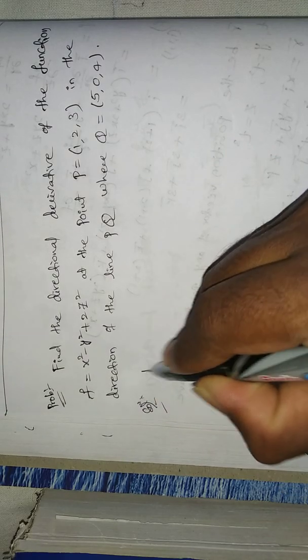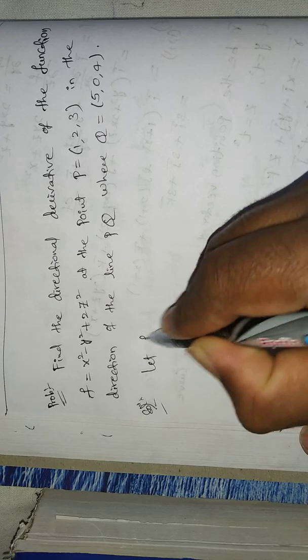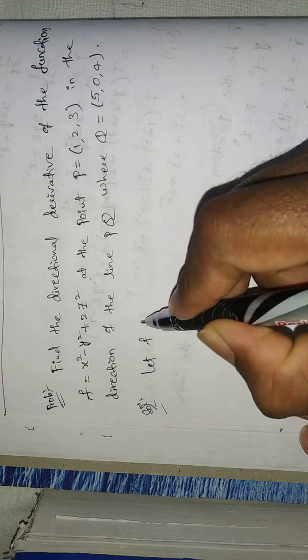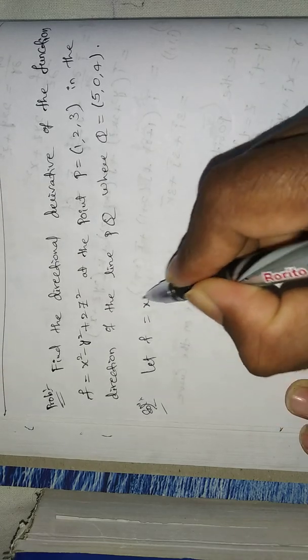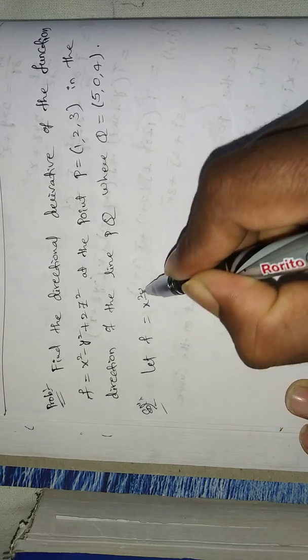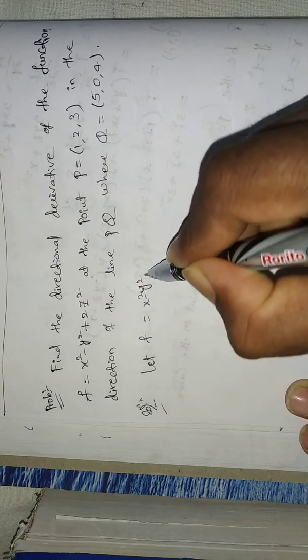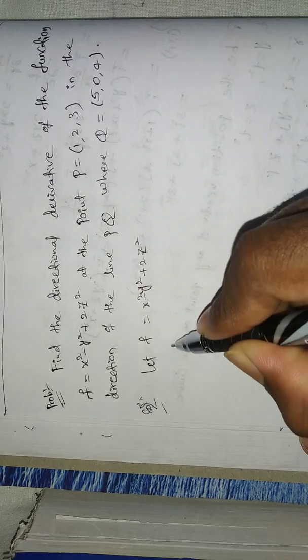Let f equal to x squared minus y squared plus 2z squared.